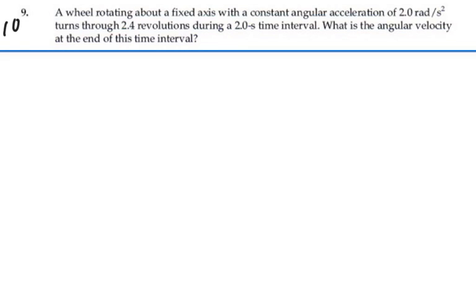Here's problem 10.9. A wheel rotating about a fixed axis with a constant angular acceleration of 2 radians per second squared turns through 2.4 revolutions during a 2 second time interval. What is the angular velocity at the end of this time interval?